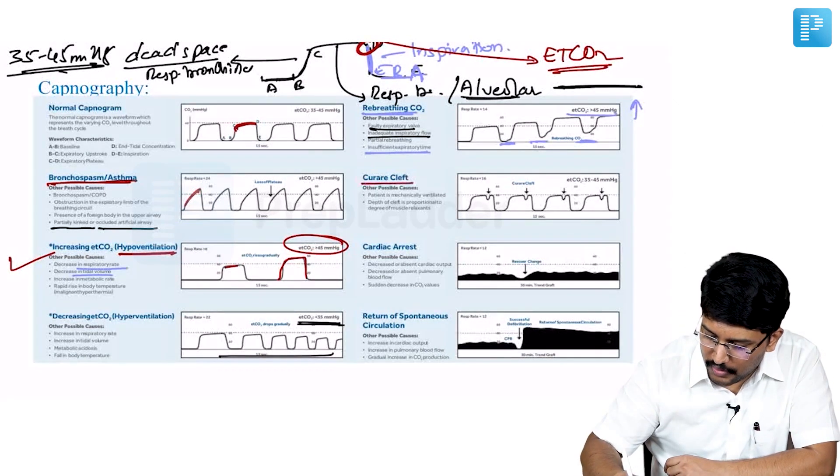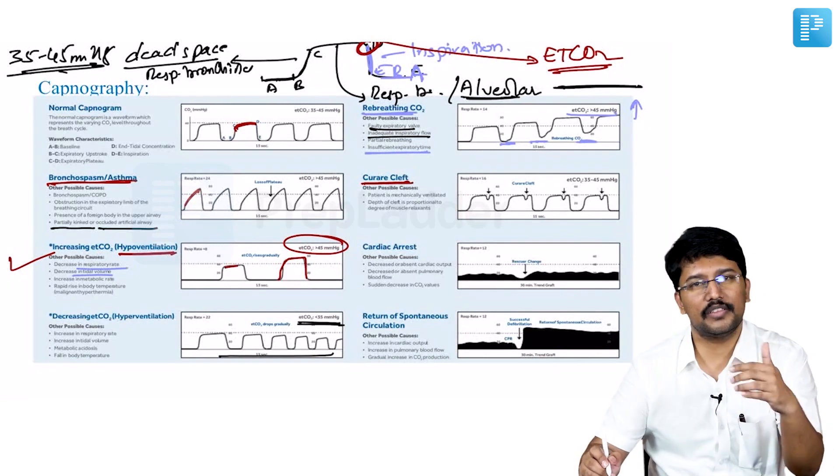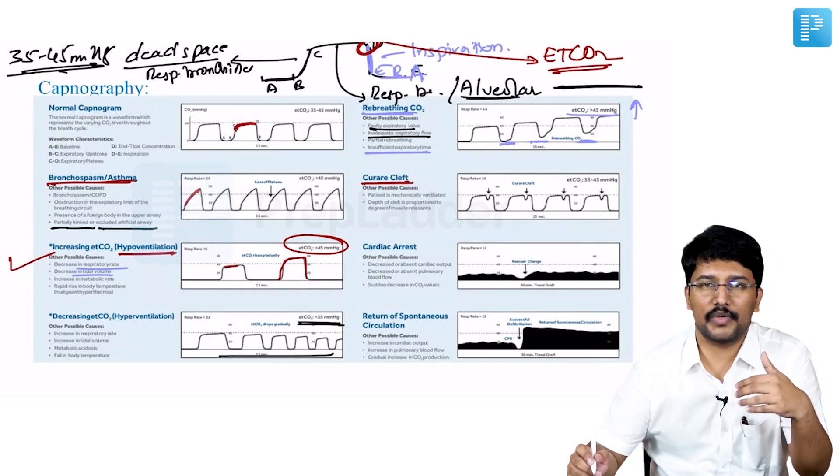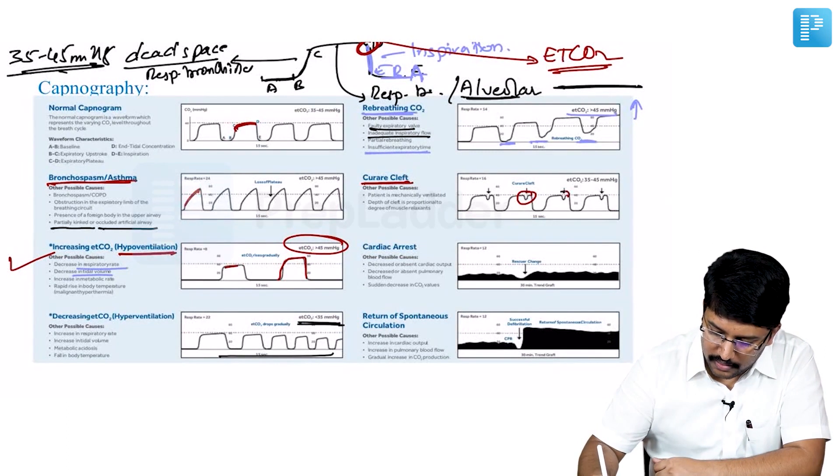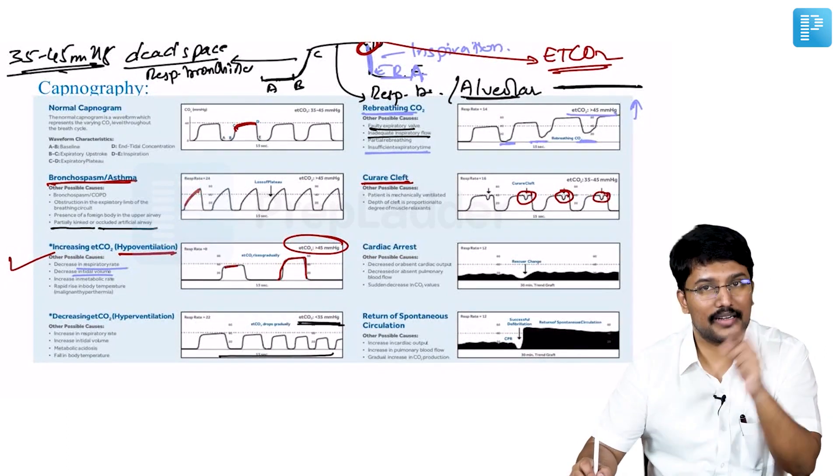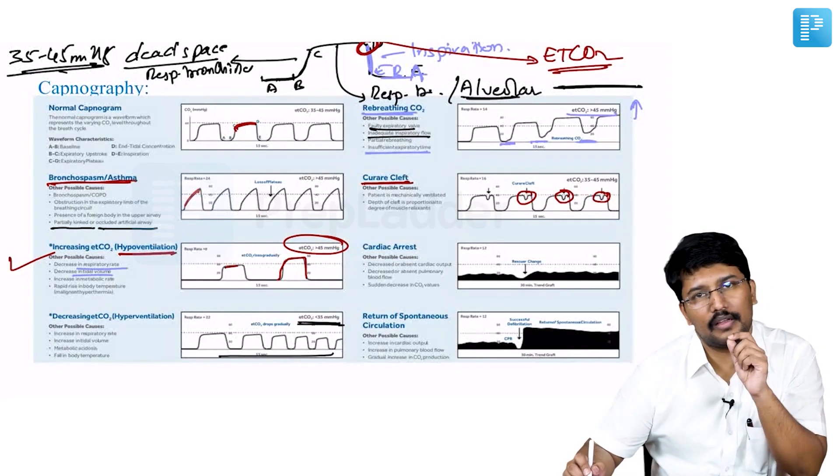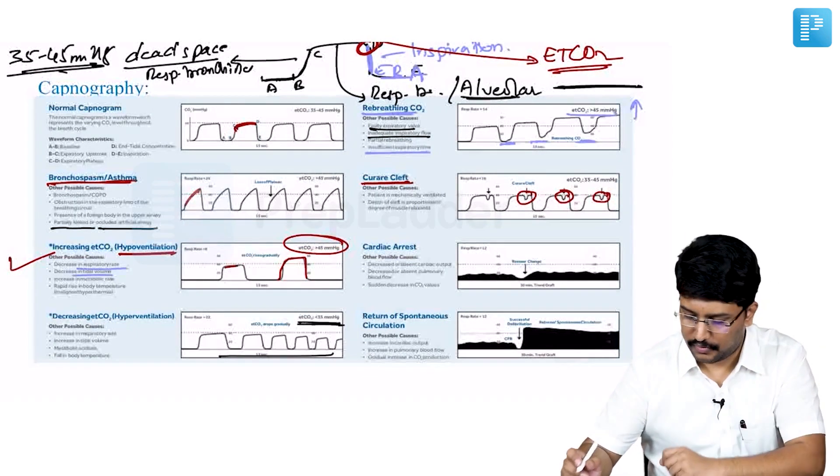Then you can also notice something interesting called as curare cleft. If the patient is mechanically ventilated and has been given a muscle blockade, you can get a cleft on the capnogram. And the depth of the muscle blockade correlates with the depth of the cleft that you see in the capnogram.